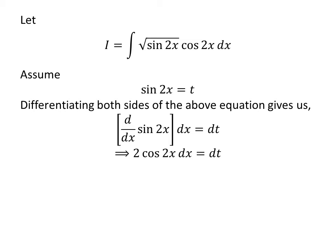The derivative of sine of 2x with respect to x is 2 times cosine of 2x, by application of the chain rule. So, 2 times cosine of 2x times dx equals dt. Shifting 2 to the right-hand side gives us cosine of 2x times dx equals one-half times dt.